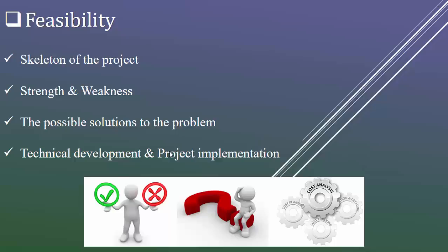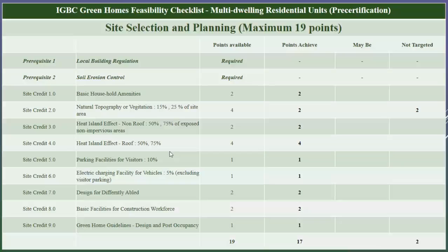Now we'll have a small introduction of the site selection and planning section. The first one is Prerequisite 1: Local Building and Regulation. This is the first mandatory requirement — a building should comply with necessary regulatory codes like an approved building or site plan, sanction letter, fit or occupancy certificate, etc. To comply with this mandatory requirement, every document must be provided to IGBC during the certification process.